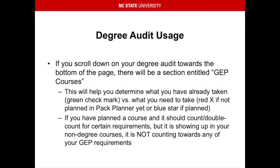If you scroll down on your degree audit towards the bottom of the page, there will be a section entitled GEP courses. This will help you determine what you have already taken, which will have a green checkmark next to it, versus what you need to take, which will have a red X if you have not planned it in the PAC planner yet, or a blue star if you have planned it. If you have planned a course and it should double count for certain requirements but it is showing up in your non-degree courses and is not counting towards any of your GEP requirements, contact your advisor.